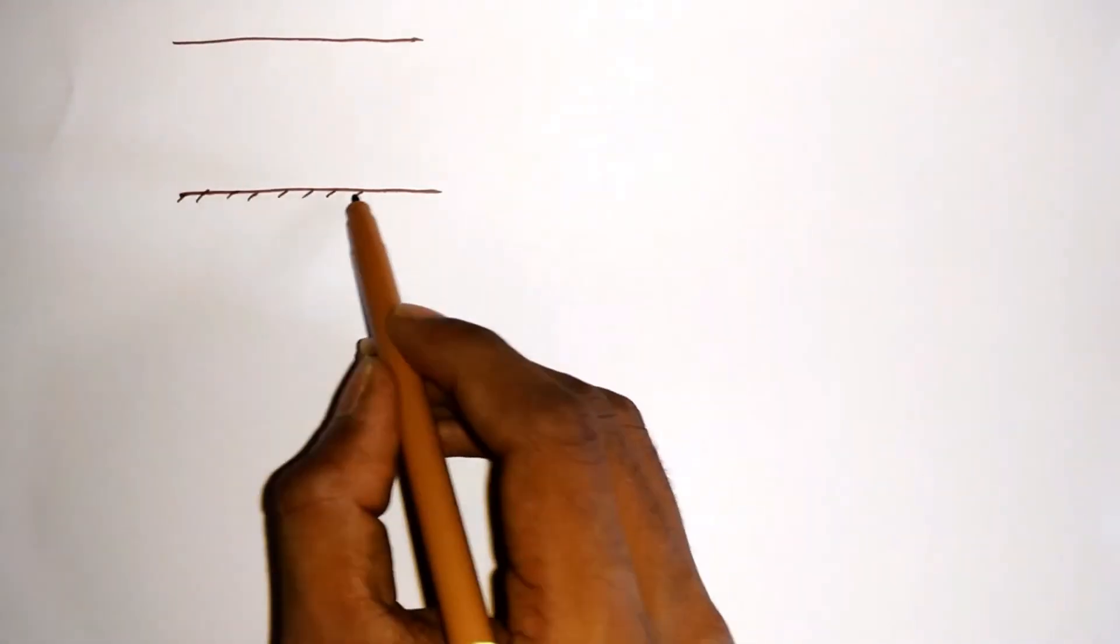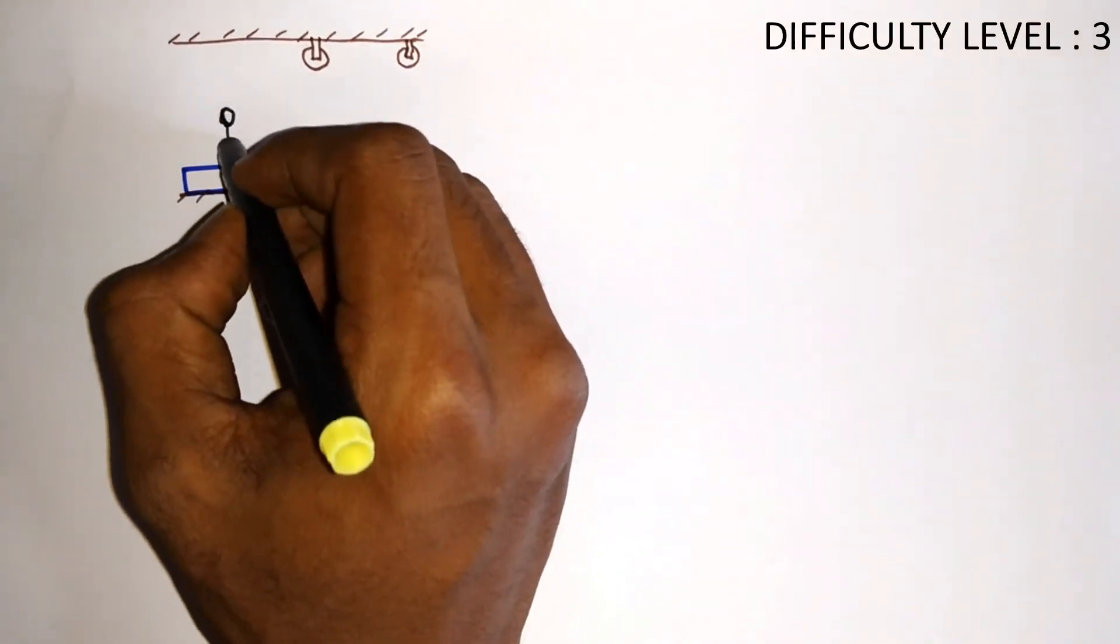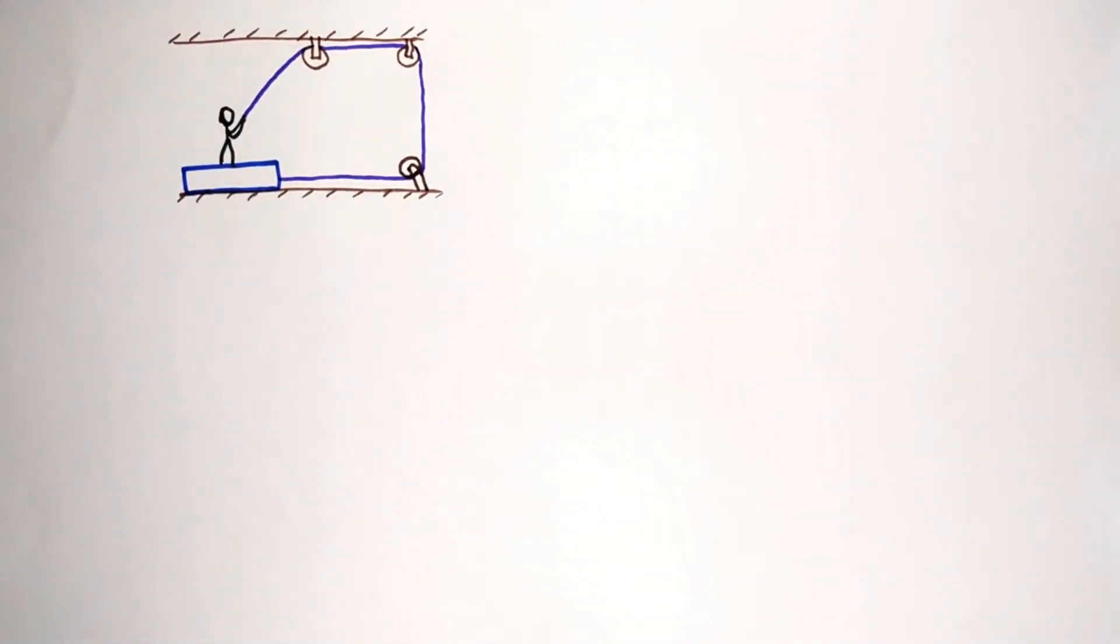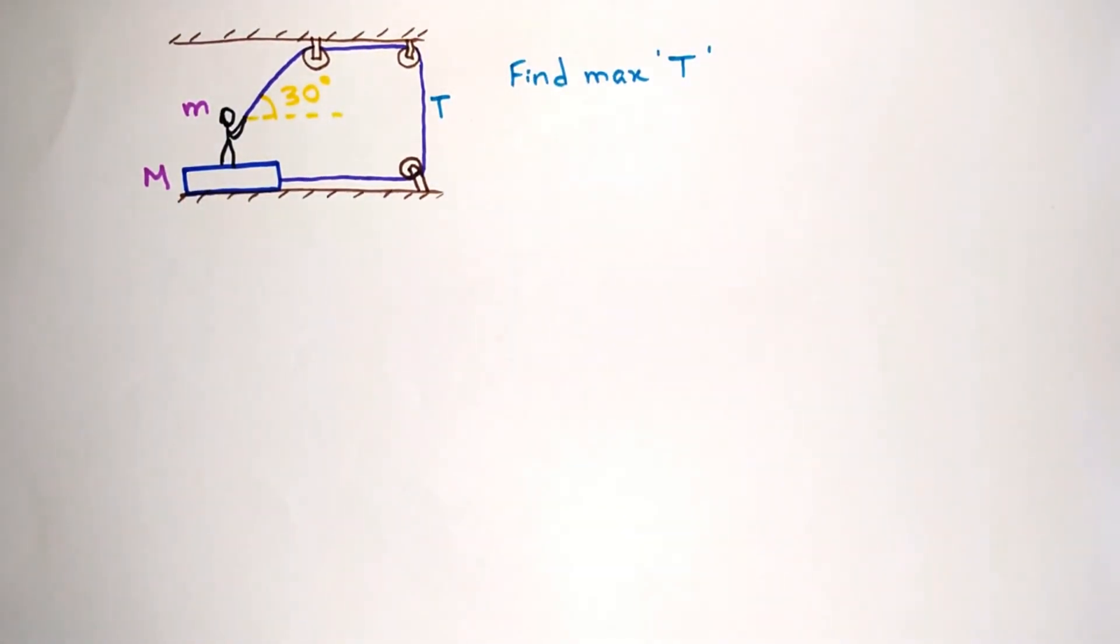Let's go to the next problem. In this problem a block is placed on the ground above which a person is holding the string connected to the block at 30 degrees. Assume their masses as capital M and small m. If μ is the coefficient of friction between all the surfaces, what is the maximum tension the person can exert so that the entire system will be in equilibrium?